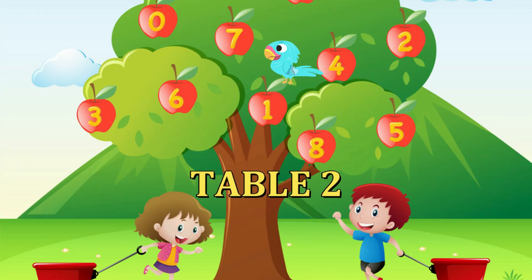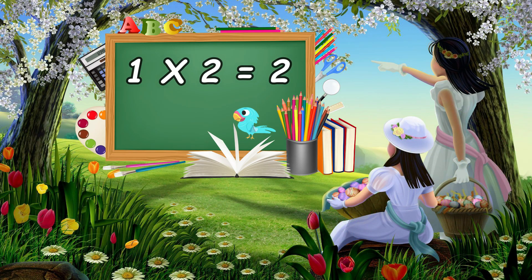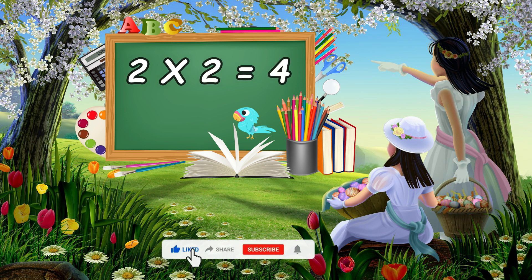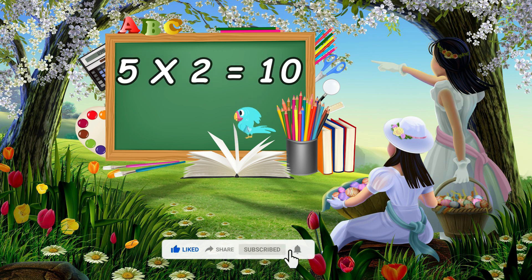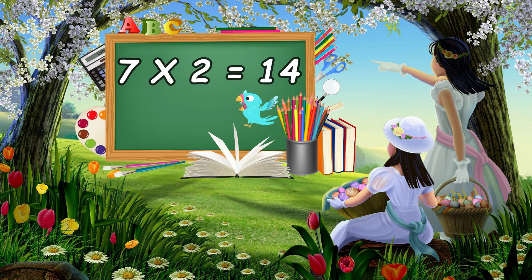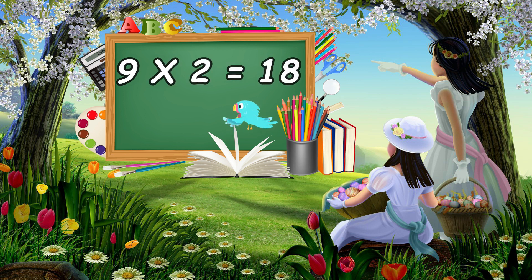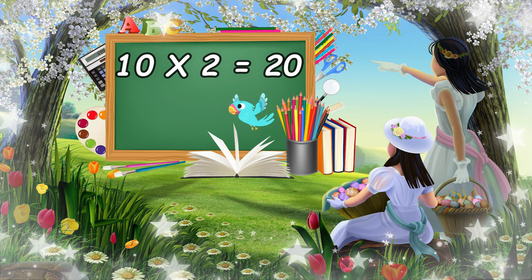Table 2. 1, 2 is 2. 2 to the 4. 3 to the 6. 4 to the 8. 5 to the 10. 6 to the 12. 7 to the 14. 8 to the 16. 9 to the 18. 10 to the 20.